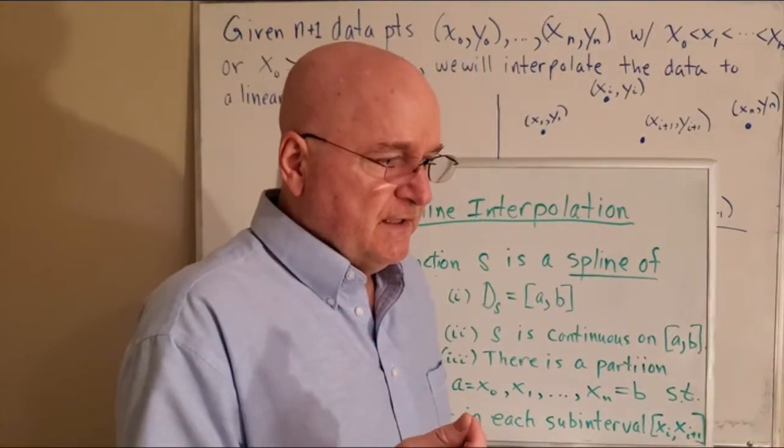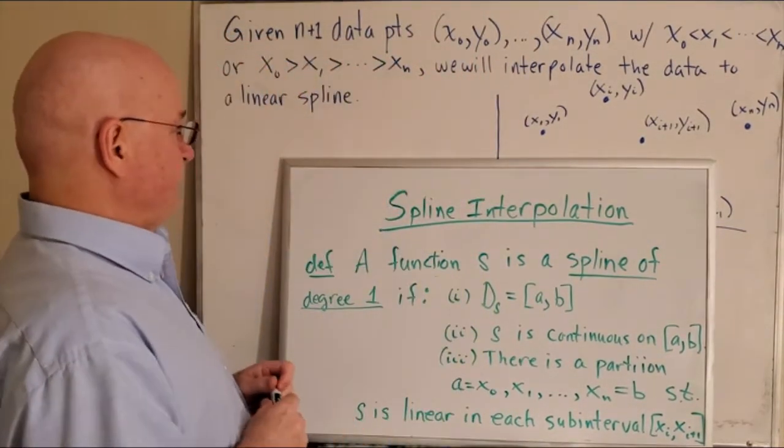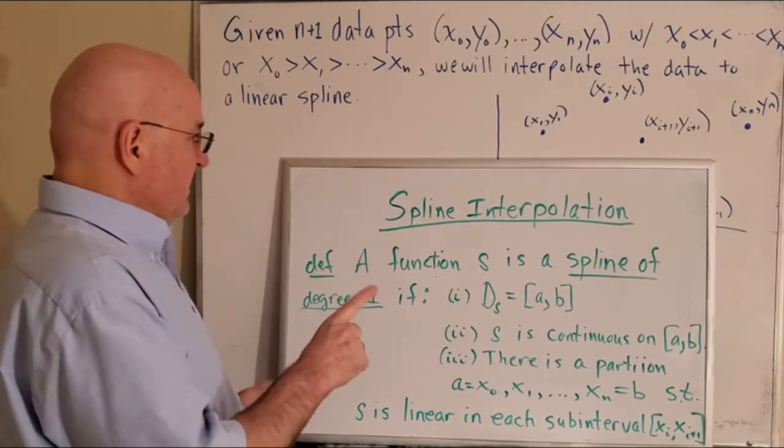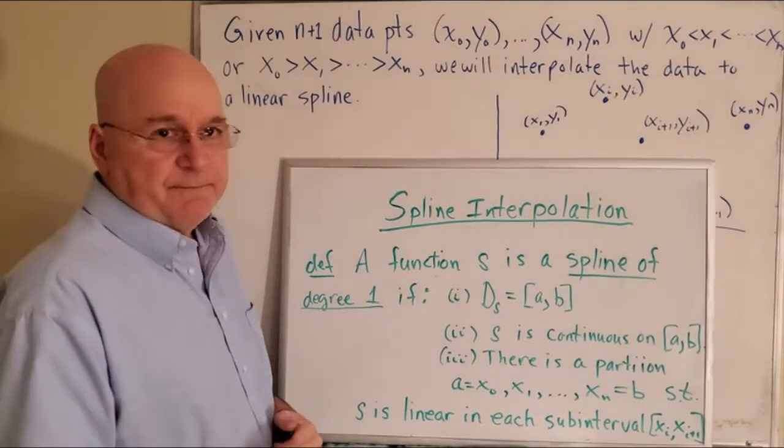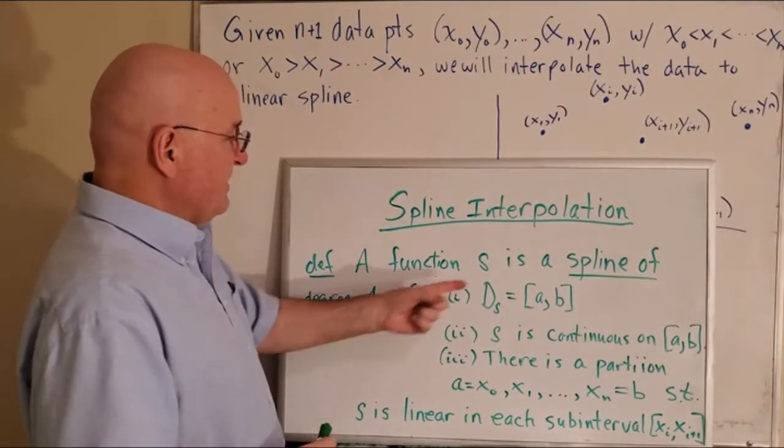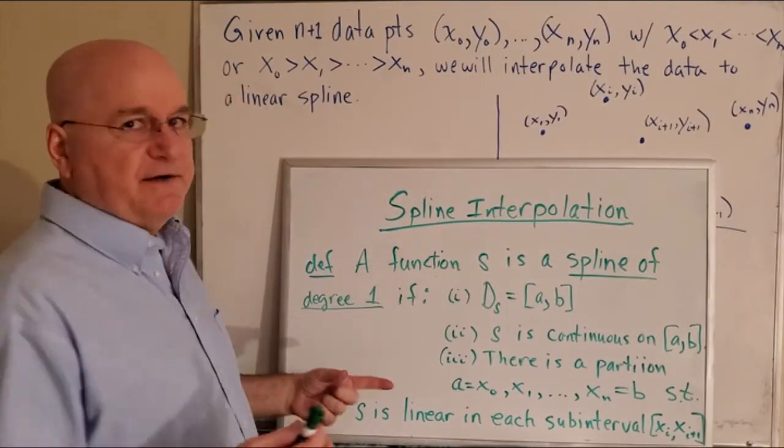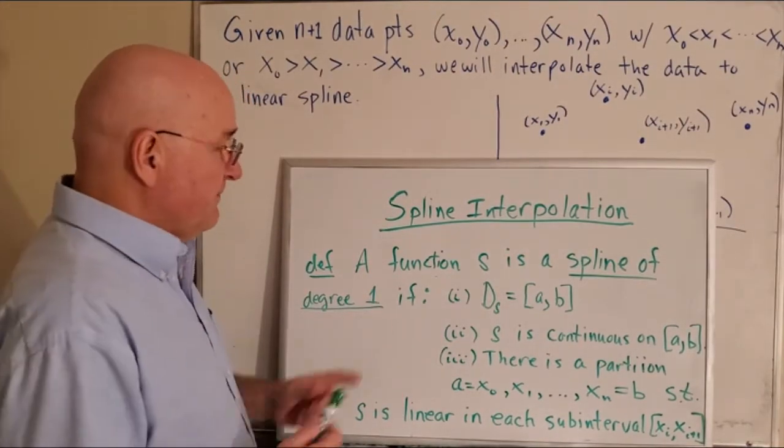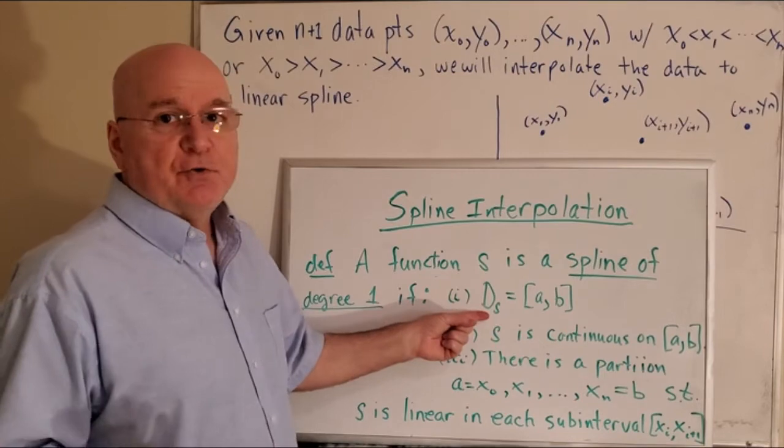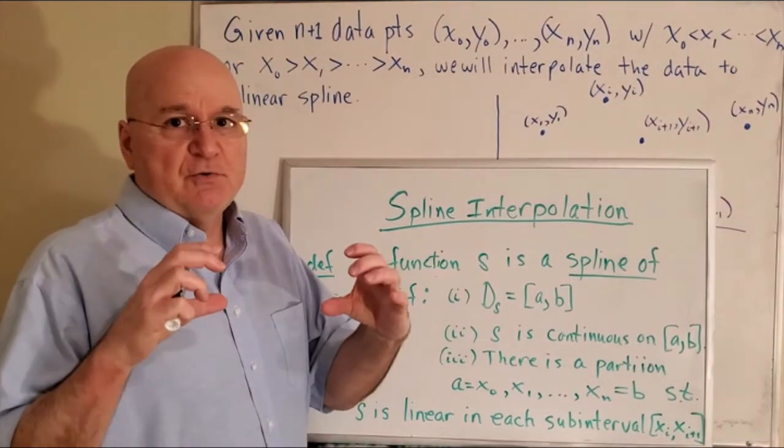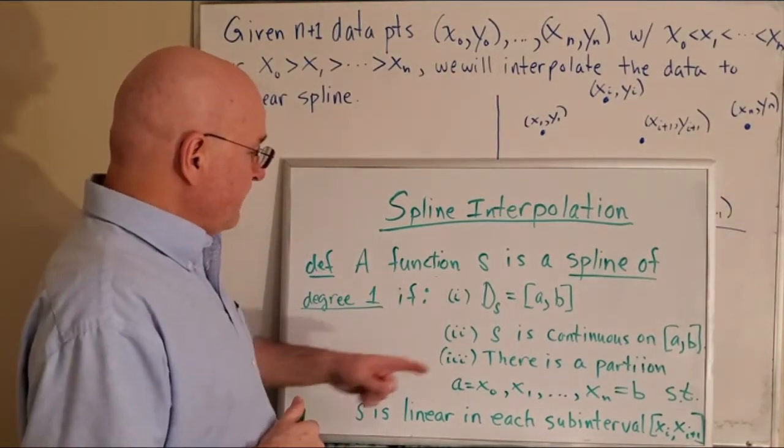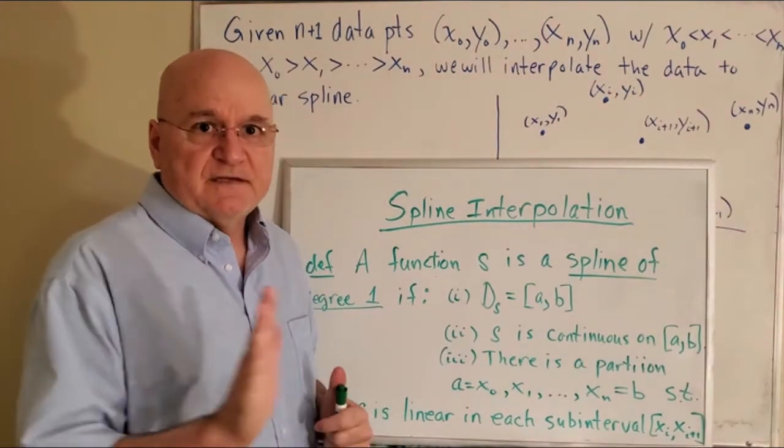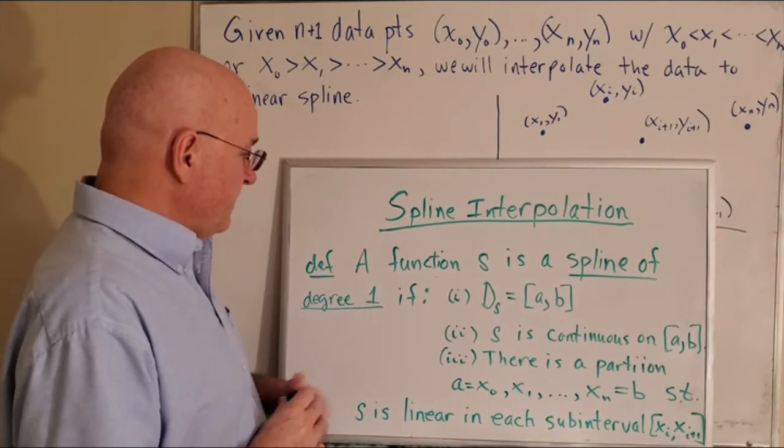The first very simple type of spline we're going to talk about, spline interpolation, is a degree one spline. And a function s for spline is a spline of degree one if all these three are true. The first one is just simply saying that its domain is the closed bounded interval from a to b. Number two, it's got to be continuous on that entire interval.